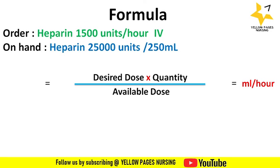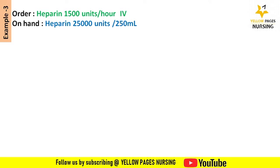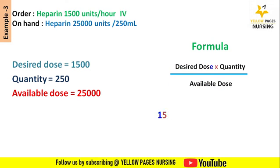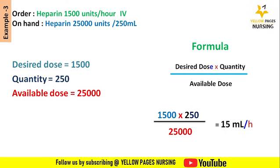According to the example, desired dose will be 1,500, quantity will be 250, available dose is 25,000. Applying all into the formula — desired dose multiplied by quantity divided by available dose — we get the answer 15 ml per hour.